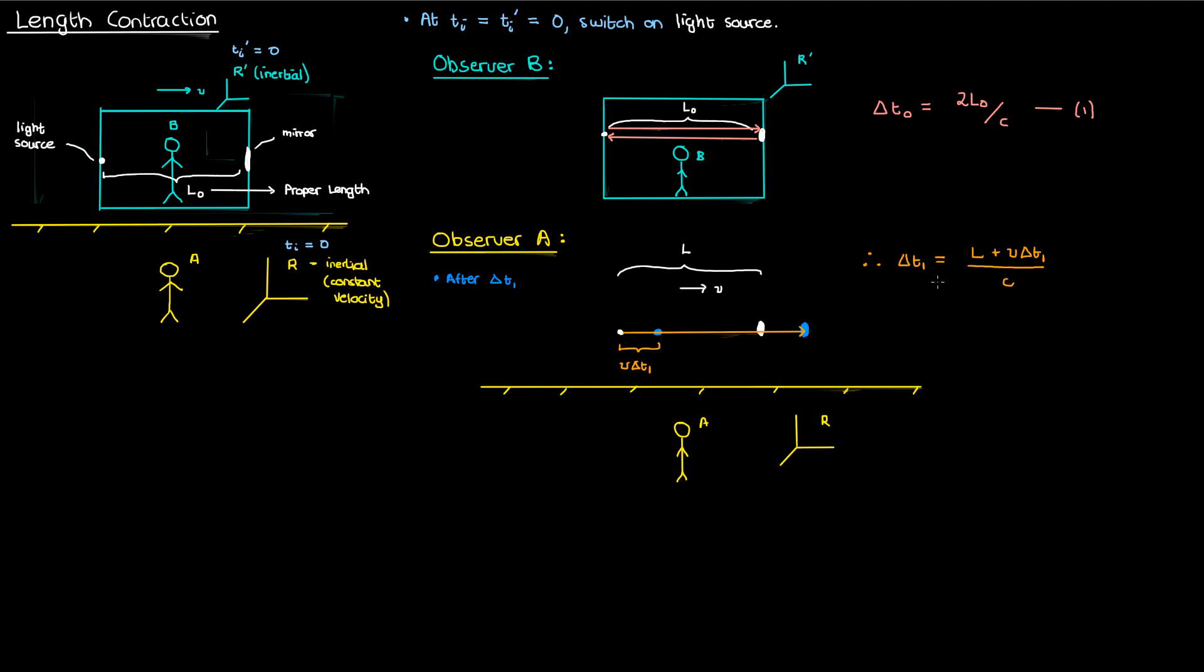Recall that C is constant in all inertial reference frames, so light will appear to travel at the same speed for both A and B. The length L measured by observer A, however, isn't necessarily equal to the L0 in B's frame.